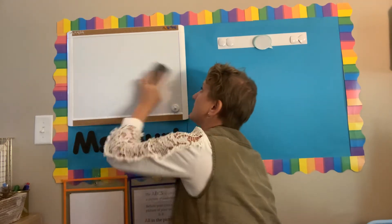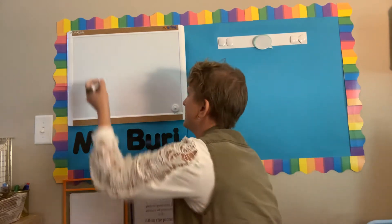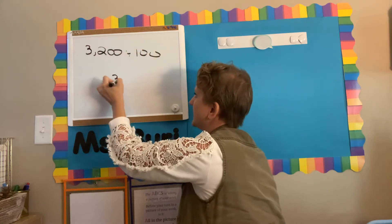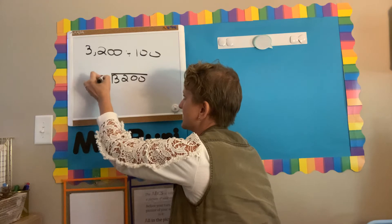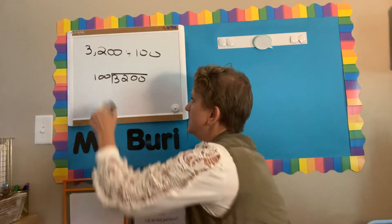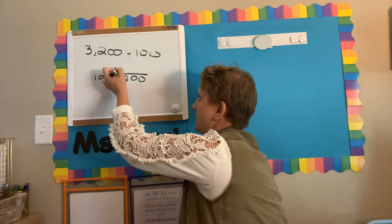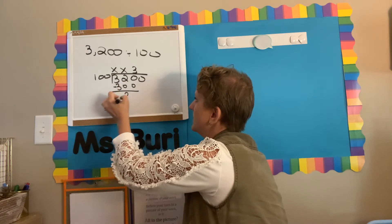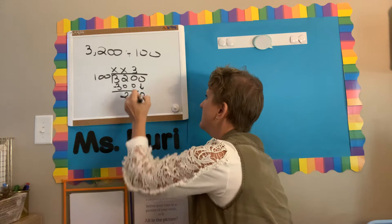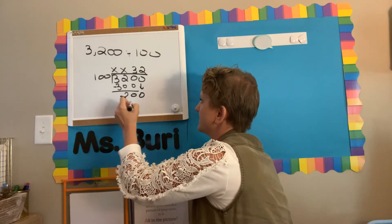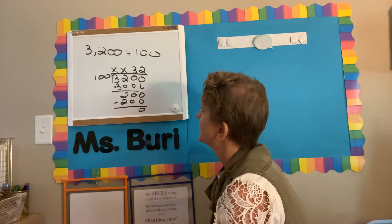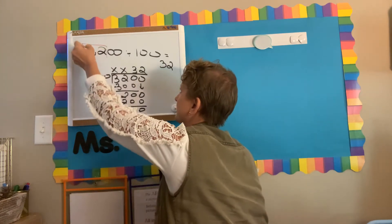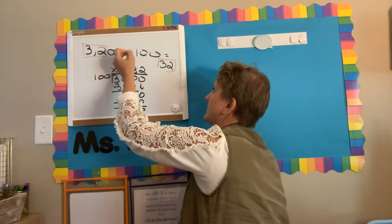Let's say we did 3,200 divided by 100. Again, I would not want you to solve this using long division, but for demonstration: 100 does not go into 3 or 32, but it does go into 320 three times with a remainder of 20. We bring down our 0 — it goes into 200 two times with no remainder. So our answer is 32. We notice the digits 32 appear, and we got rid of these two zeros.